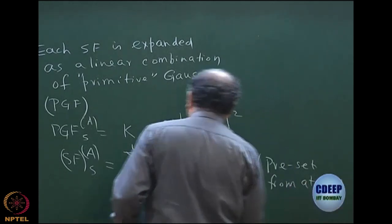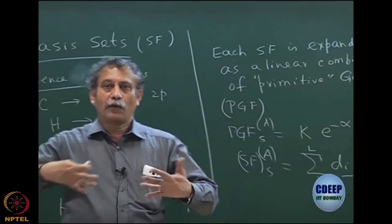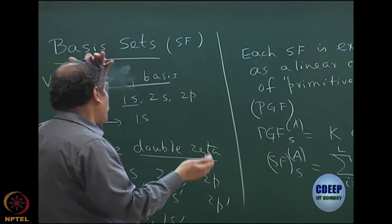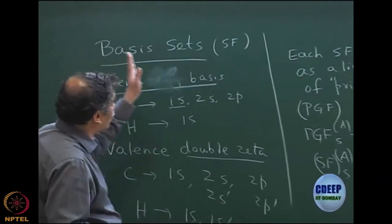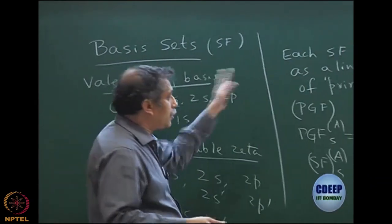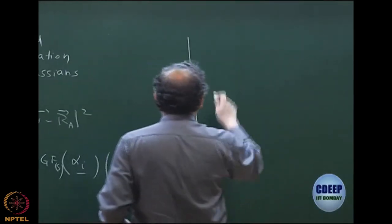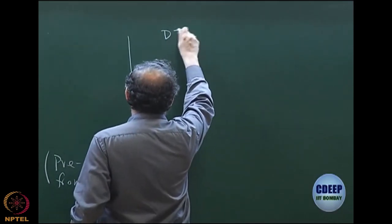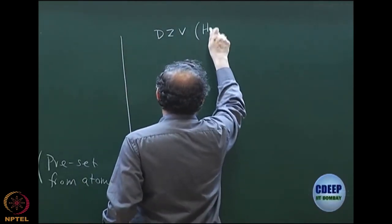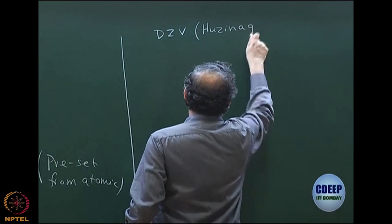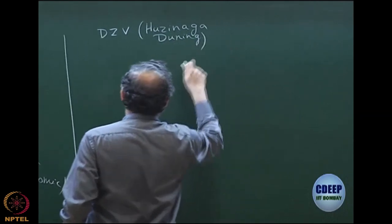These coefficients are not part of the SCF; they are known from atomic orbital calculations for the valence-only basis. Before going to further basis sets that include more than valence, let us look at two particular basis sets of use: the valence double zeta, named after Dunning and Huzinaga, and the 6-31G, 4-31G, 3-21G type, which are the Pople basis sets.